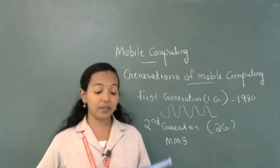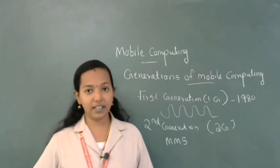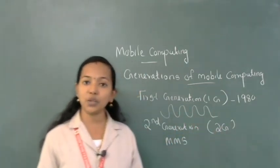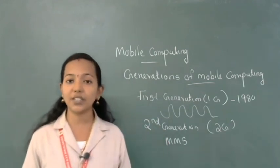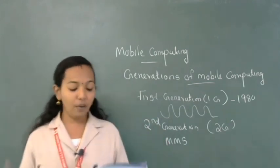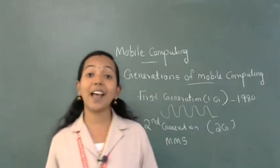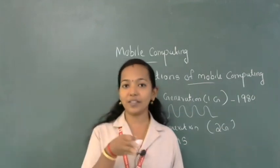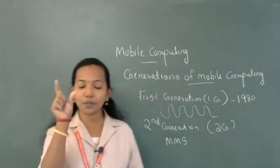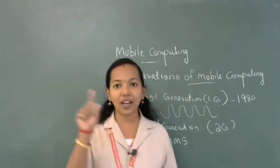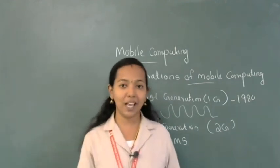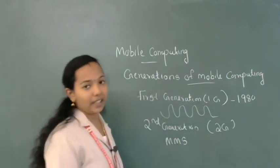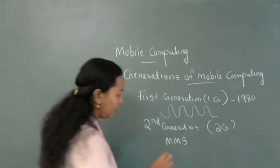In the 2G network, phone conversations are digitally encrypted — a very important point. Digitally encrypted means the analog signal is converted into digital format, which increases the quality of voice. Another advantage is that 2G introduced data services for mobile, like picture messages and MMS — small icons and graphics-based pictures we can send — and Multimedia Messaging Service was also introduced.